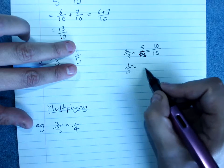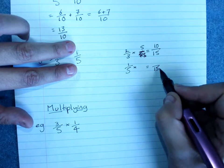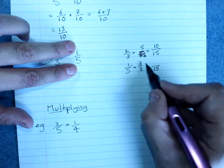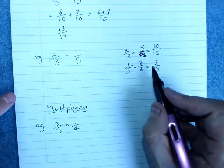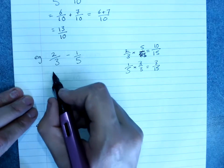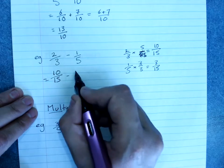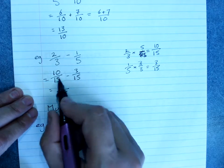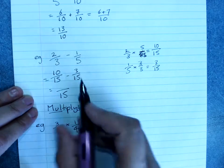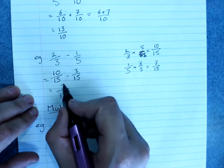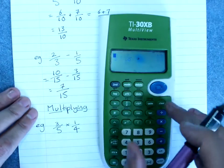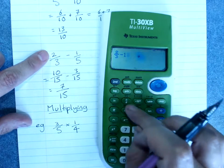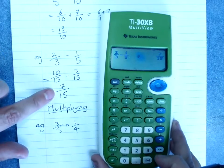1 fifth times something has to end up over 15. 5 times what is 15? That would be times 3. 1 times 3 would be 3. So this fraction would be 3 over 15. So I have 10 over 15 minus 3 over 15. Our answer will end up over 15 because we only subtract or add the numerators. 10 minus 3 is 7. To check with a calculator, 2 over 3 minus 1 over 5, 7 over 15.